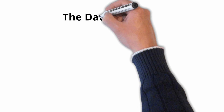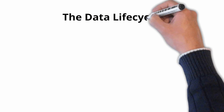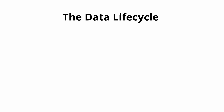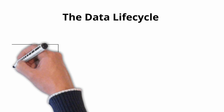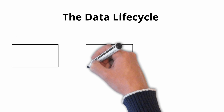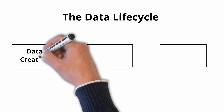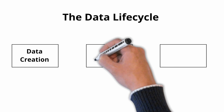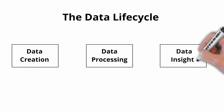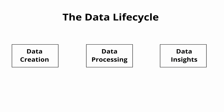To explain the differences we're going to start with the data life cycle, and the data life cycle consists of three stages: there's a data creation stage, there's a data processing stage, and there's a data reporting and insight stage.